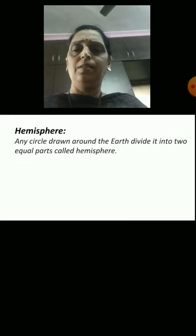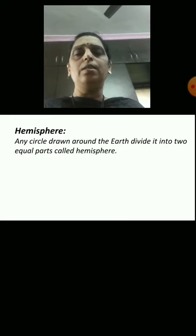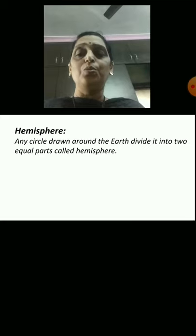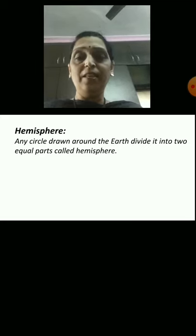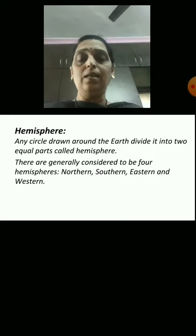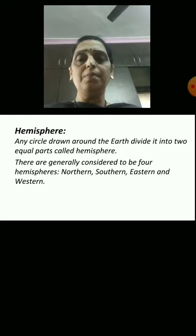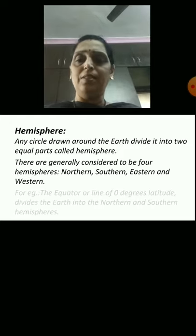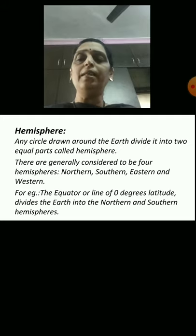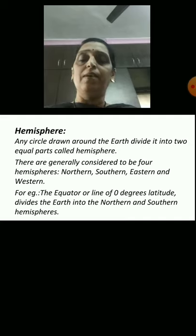The next point was hemisphere. What is hemisphere? Any circle drawn around the earth divides it into two equal parts called hemispheres. There are generally considered to be four hemispheres: northern hemisphere, southern hemisphere, eastern hemisphere, and western hemisphere. For example, the equator, or line of 0 degrees latitude, divides the earth into the northern and southern hemisphere.